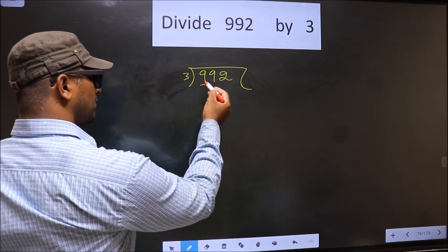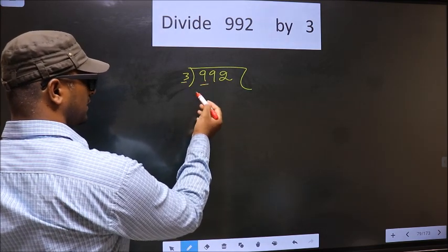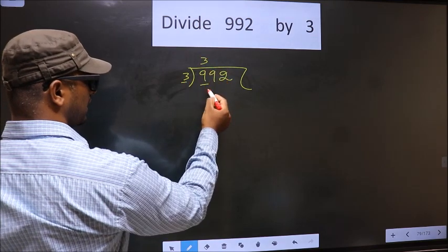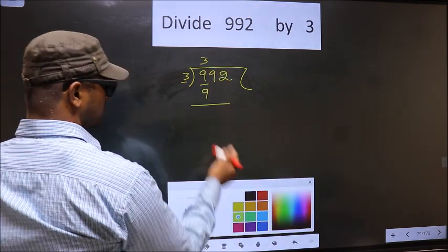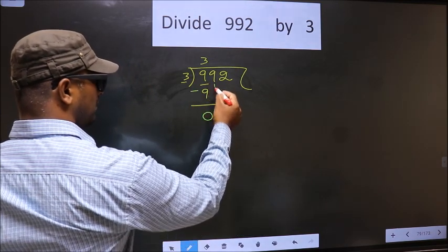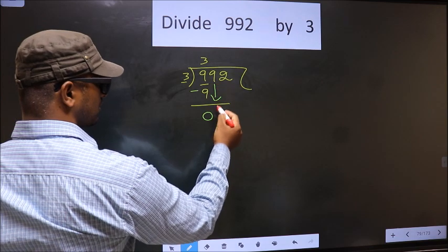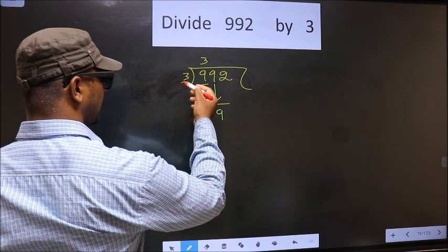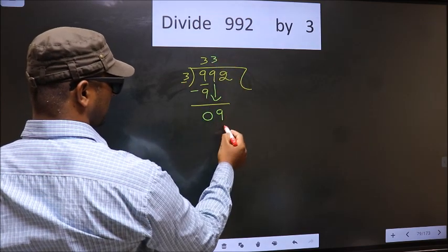Now here we have 9, here 3. When do we get 9 in 3 table? 3 times 3 is 9. Now you subtract. 9 minus 9, 0. Now you bring down beside number. So 9 down. So here 9, here 3. When do we get 9 in 3 table? 3 times 3 is 9.